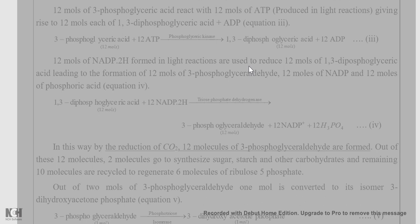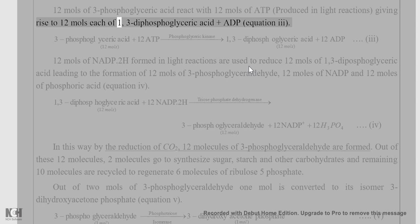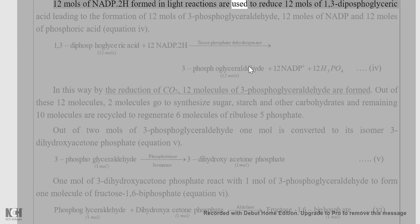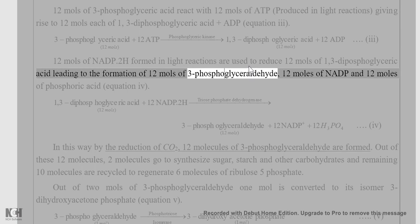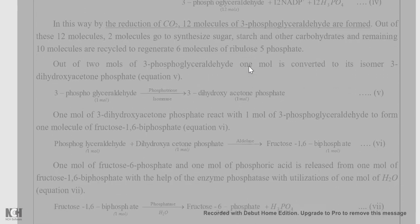Glycolytic reversal: carboxylation is followed by reactions that involve reversal of glycolysis. Twelve moles of 3-phosphoglyceric acid react with 12 moles of ATP produced in light reactions, giving rise to 12 moles of 1,3-diphosphoglyceric acid and ADP. Then, 12 moles of NADPH2 formed in light reactions are used to reduce 12 moles of 1,3-diphosphoglyceric acid, leading to the formation of 12 moles of 3-phosphoglyceraldehyde (PGAL), 12 moles of NADP, and 12 moles of phosphoric acid.